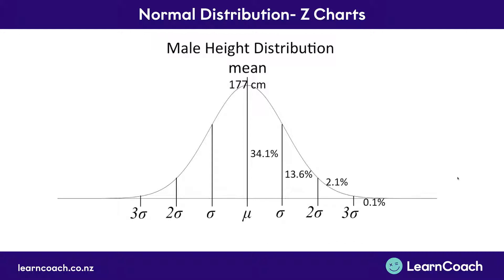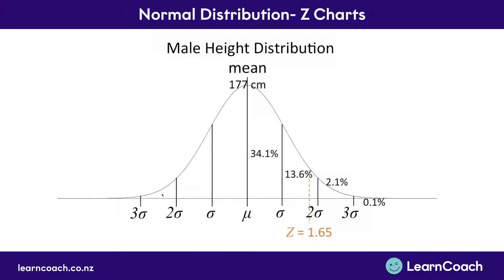Now how does a z-chart come into this? We have a thing called a z-score, and a z-score is how many standard deviations a certain position is. So this orange line here is 1.5 standard deviations away from the median. This other line over here is 1.2 standard deviations away from the median, so that would have a z-score of 1.2. This next z-score is 1.65 standard deviations away from the median, therefore it has a z-score of 1.65. Now we're going to learn how to find this z-score and how to change a z-score into a probability.